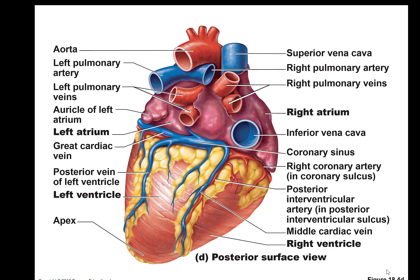This video is about cardiovascular anatomy part three. In the last video we ended by talking about coronary veins. Coronary veins remove blood that has been depleted of oxygen from the myocardium and return that blood to the right atrium.